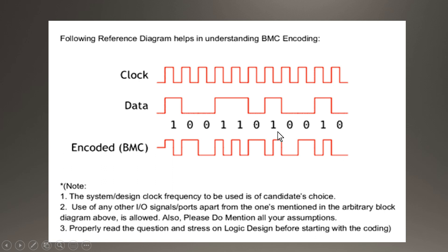This was all about BMC encoding. Apart from this, the candidate was given a few assumptions. One of them was that the system design clock frequency to be used is of the candidate's choice. Obviously, when a candidate is going to design a CDR module — and it is a sequential module — it needs a local clock, and that local clock frequency was of the candidate's choice.